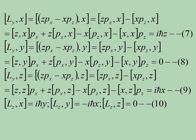So if it is [Lx, x] it is 0; [Ly, y] is 0; [Lz, z] is 0. For the z component: [Lz, x] = iℏy, [Lz, y] = minus iℏx, and [Lz, z] = 0. So it is like a cyclic permutation. If it is [Lz, x] it means iℏy; if it is [Lz, y] it means minus iℏx. Similarly you can get all the values. Thank you.